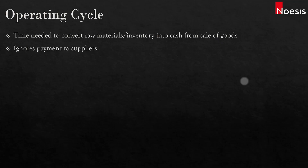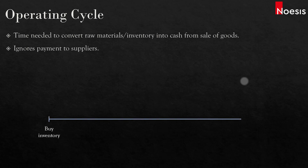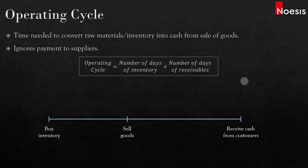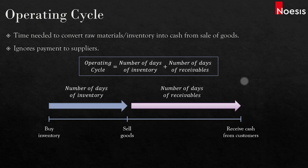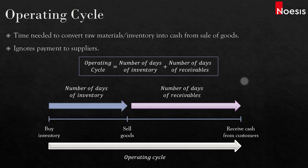We'll first look at the operating cycle, which is the time needed to convert the raw materials or inventory into cash from a sale of goods. The operating cycle ignores payment to the suppliers. On the timeline, the business will first buy the inventory from the supplier and take some time to sell the goods to customers, who are given credit terms. So the operating cycle equals the number of days of inventory — the average days taken to sell goods — plus the number of days of receivables, which is the average number of days taken to collect cash from customers.